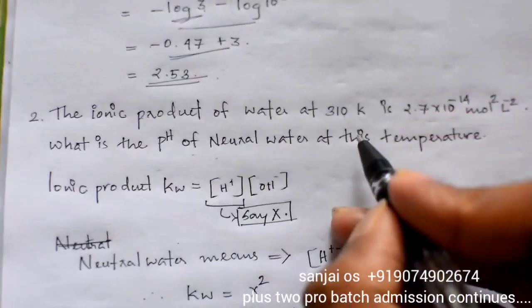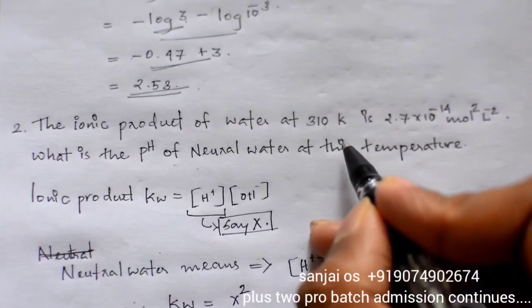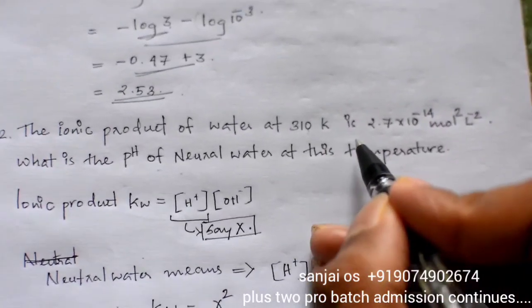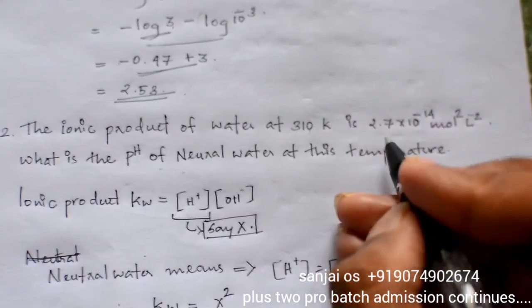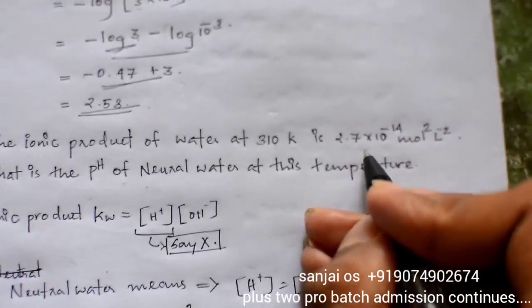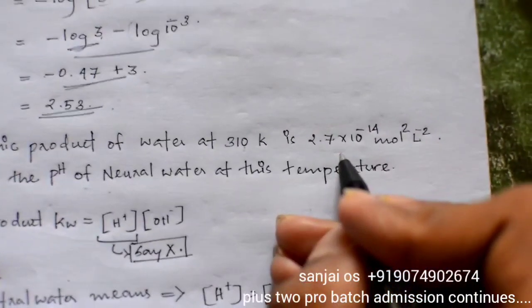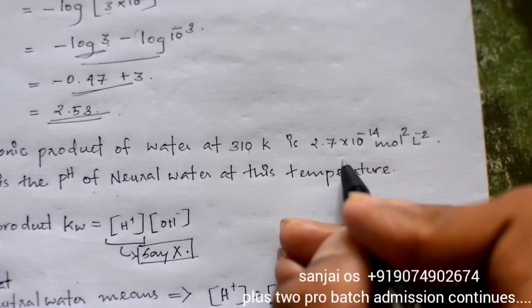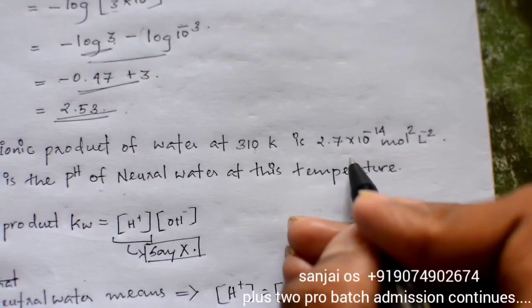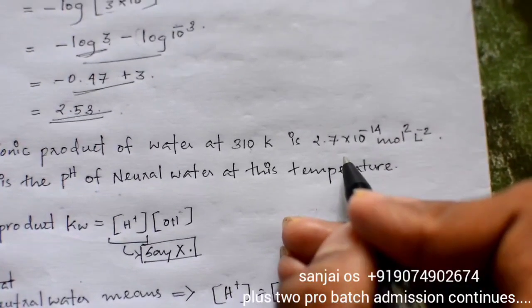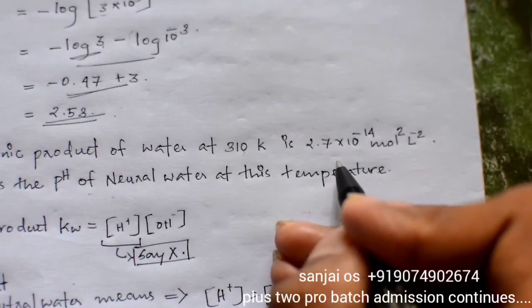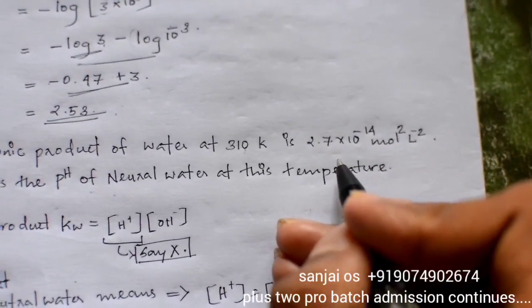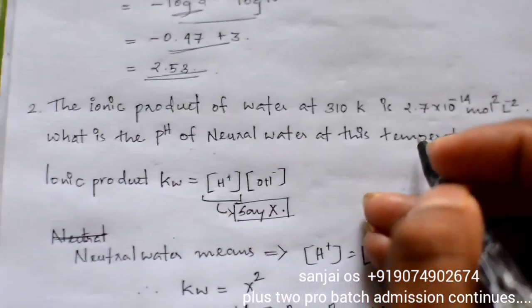The ionic product of water at 310 Kelvin is 2.7 into 10 raised to minus 14 mole square per litre squared.